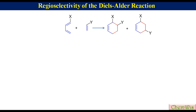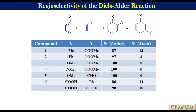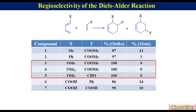For the clarification of the first point, the substituents X and Y along with the percentage product distribution have been shown in this table. We can see that irrespective of the nature of X and Y, whether they are electron-donating or electron-withdrawing, the ortho adduct is the major adduct. In cases 3, 4, and 5, there was only the ortho product — the meta adduct could not even be detected.